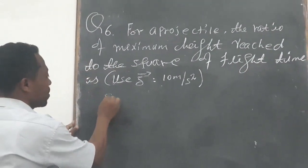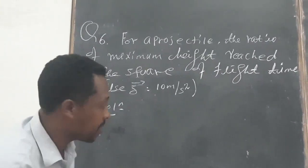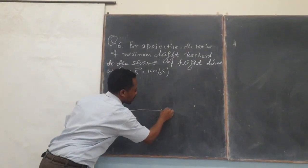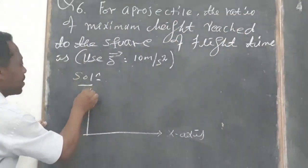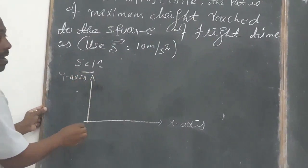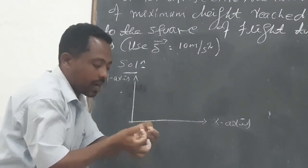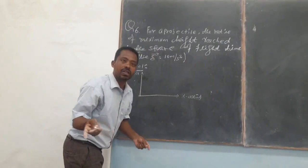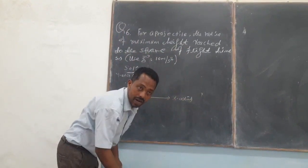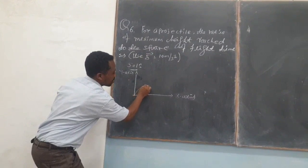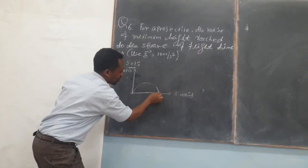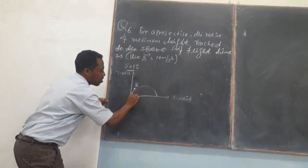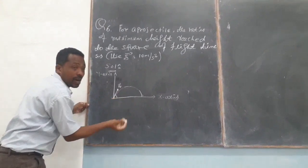First, what we have to do is we have to set up the XY plane. Some object, or projectile, is launched at a certain angle theta, and then it follows an inverted parabola-like trajectory. If the initial velocity of the projectile is given and it is launched at a certain angle theta, we proceed.